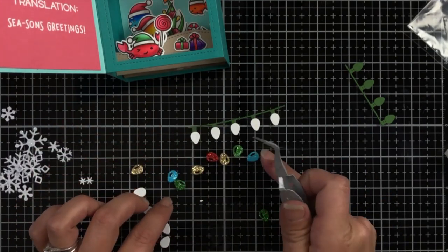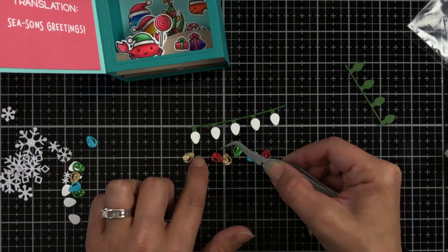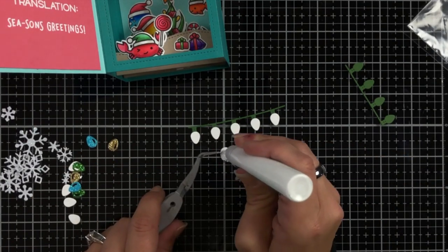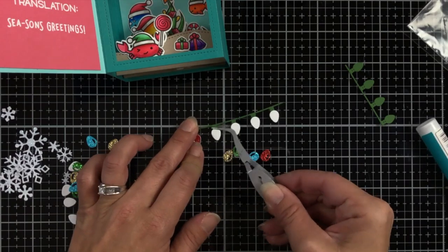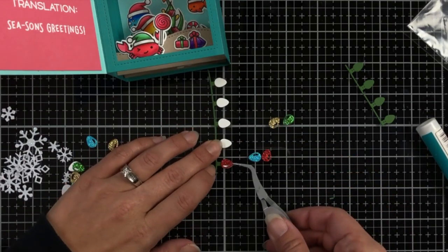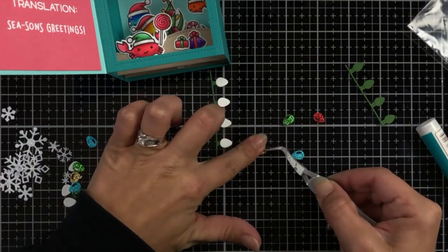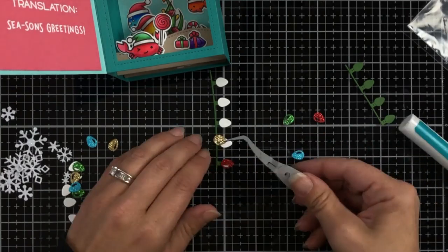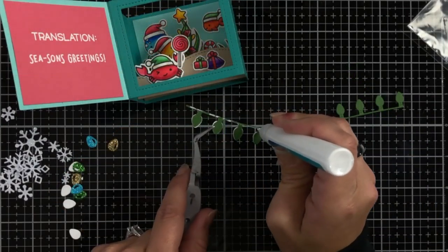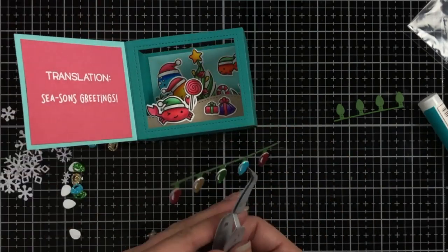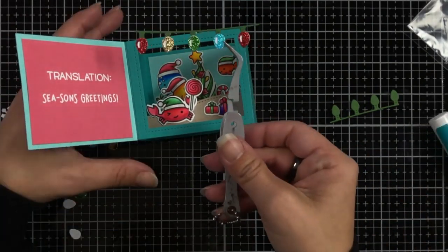This is why it's always good to save anything you die cut extra of because you just never know when it's going to work for another project. So once I have all of my string of lights added there, I'm just taking a little bit of that glue and adding it to the top of the string of lights. Like I said, you want to be careful. You don't have any excess glue sticking out because you don't want your card to stick together.